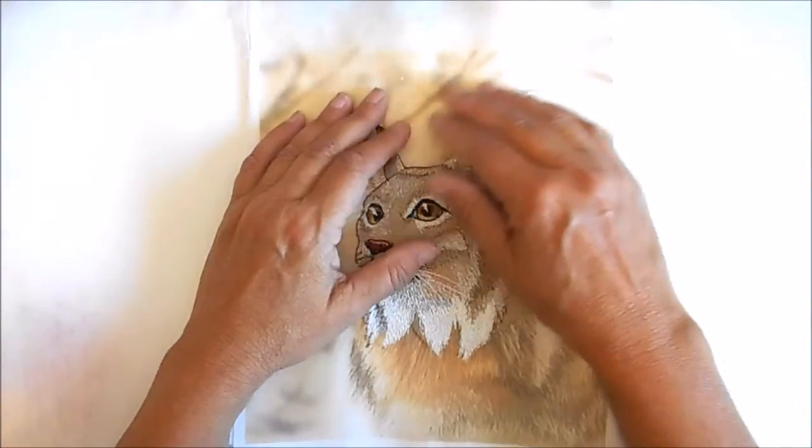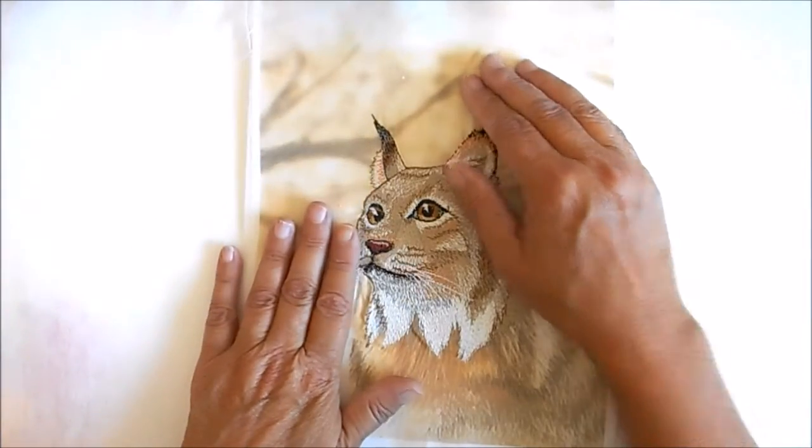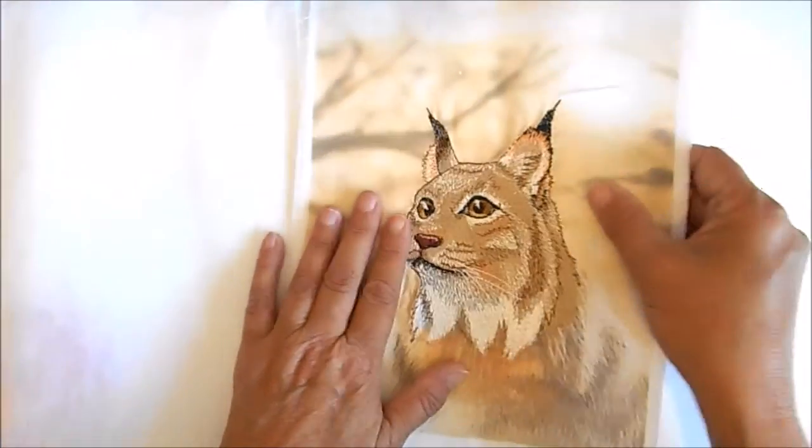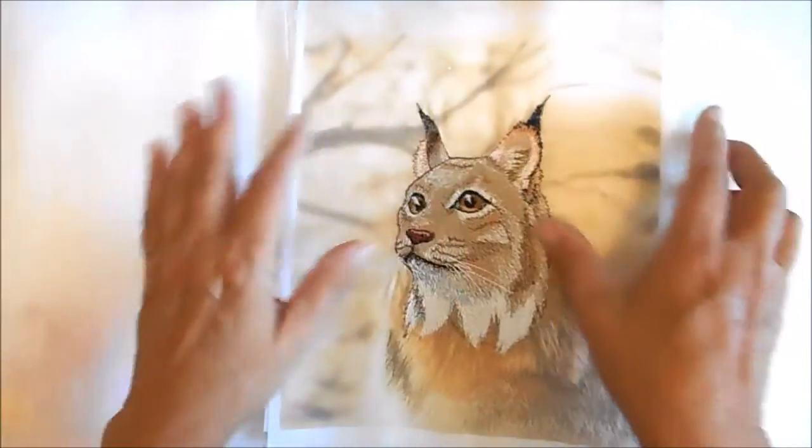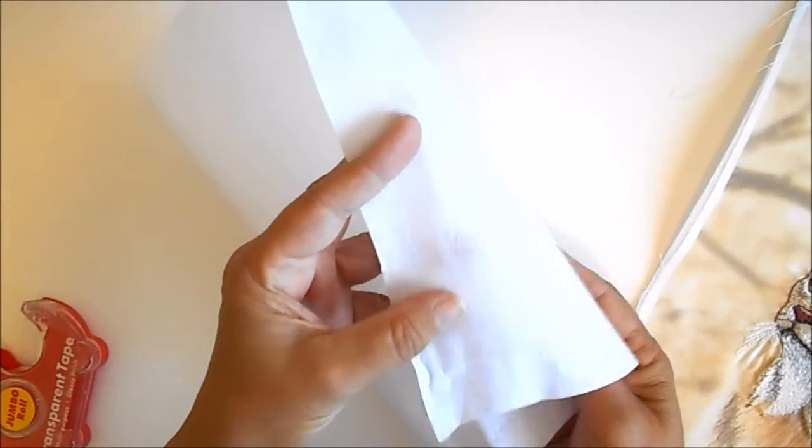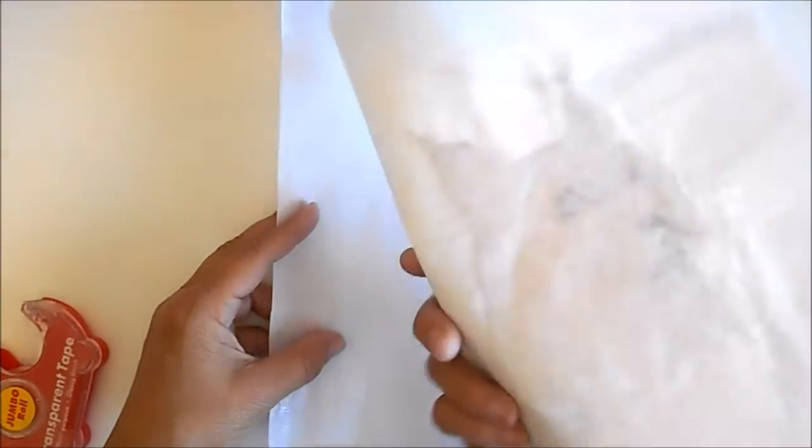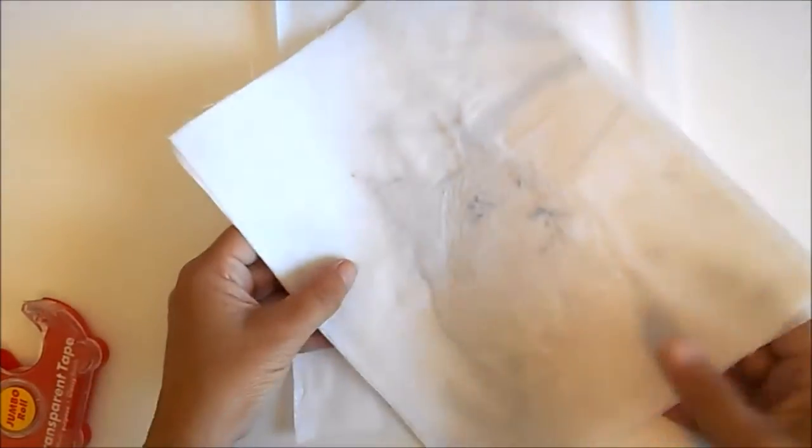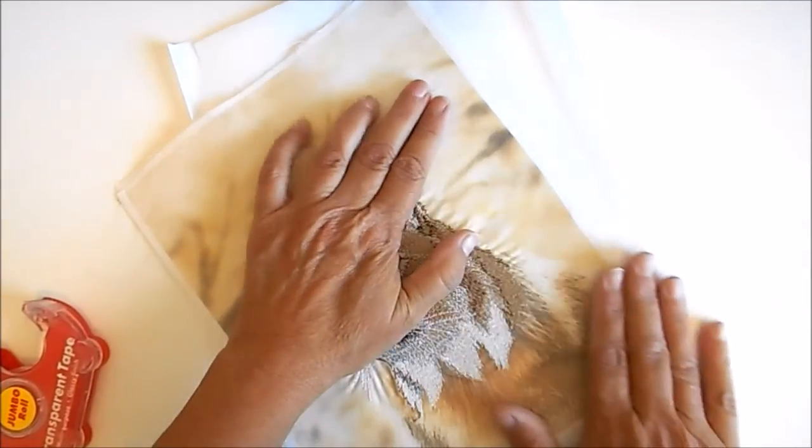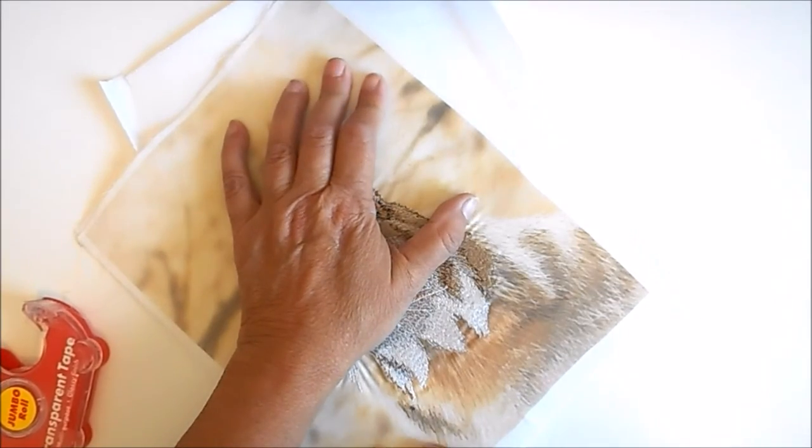Many times I'll have a little bit of puckering around the embroidery. So to get rid of that, I use an iron-on stabilizer. And I have to make sure that the shiny side is what I'm ironing onto the back of the embroidery piece. But I iron it onto the back and I get the fabric to lay nice and smooth that way.